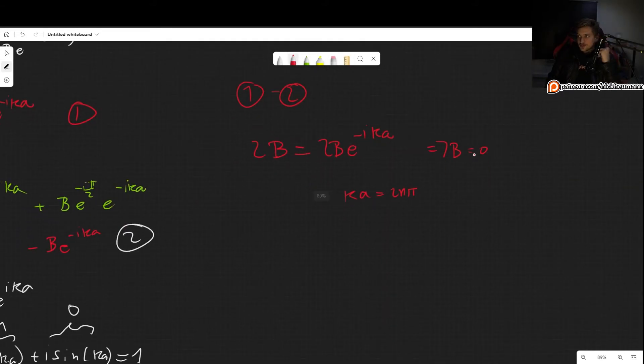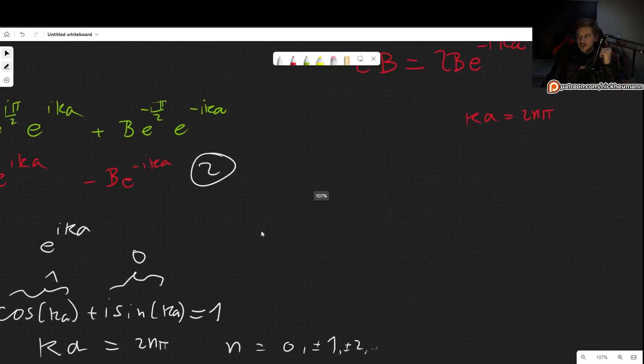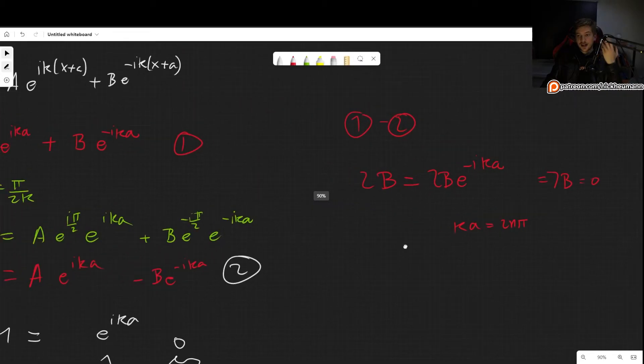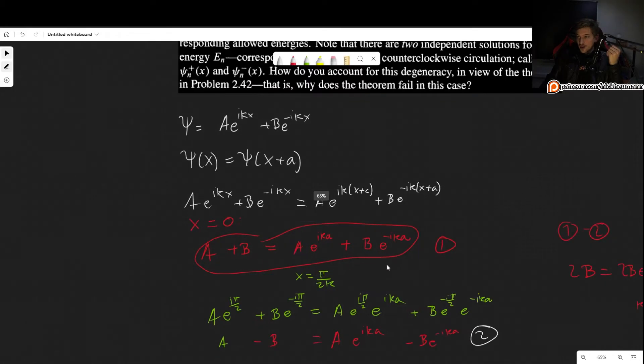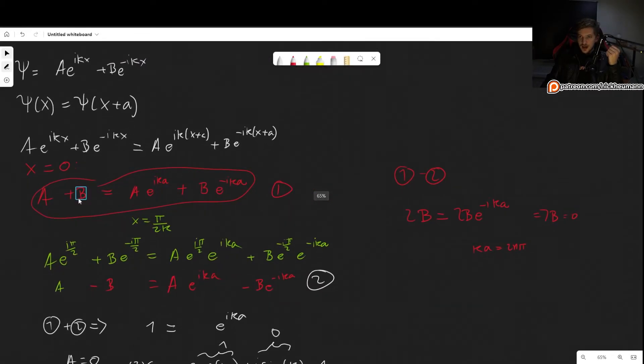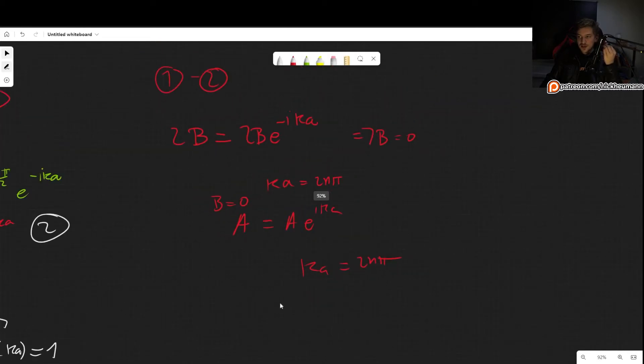Here, we are in exactly the same situation that we just had for A, but this time for B. Plugging in that B equals 0 will get us that A has to equal Ae^(ika). So once again, we get the condition ka is 2nπ, and B equals 0, so we cannot choose A equals 0.